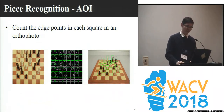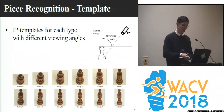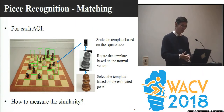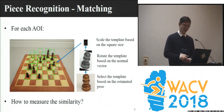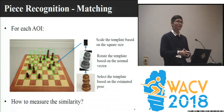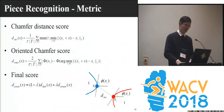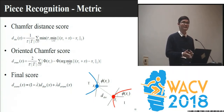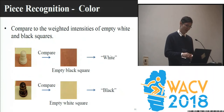We count the edge points in each square to roughly determine the area of interest. We prepare 12 templates for each type of piece with different viewing angles — here is an example of the bishop templates. The matching process is straightforward: for each area of interest, we select the template based on the estimated pose, then rotate it based on the normal vector and scale it based on the square size. To measure similarity between the contour in the template and the contour in the test image, we use the oriented Chamfer score, which contains two parts: the distance score and the orientation score. The final score is the weighted sum of these two, and higher similarity gives a lower score. Finally, we can determine the piece color by comparing the intensity of empty white and black squares.